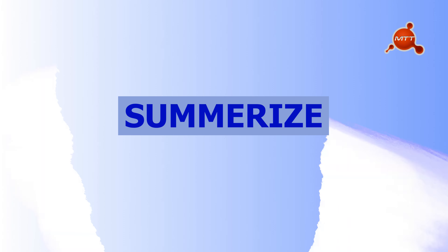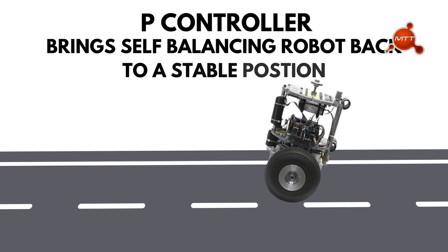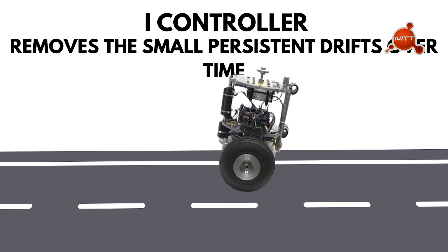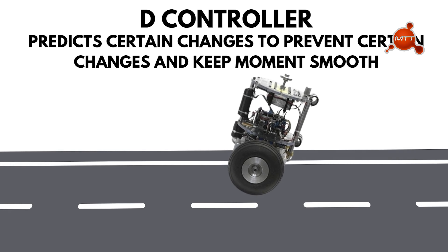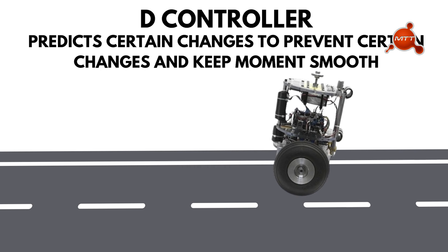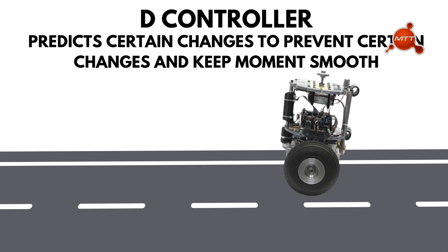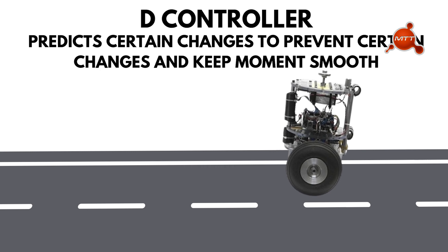To summarize, the PID controller on a self-balancing robot combines all three elements: P brings the robot back to a stable position, I removes small persistent drifts over time, and D predicts sudden changes to prevent overshoot and keep movements smooth. The self-balancing robot stays balanced by constantly adjusting its wheel speed in response to tilt and movement, ensuring smooth and stable operation.